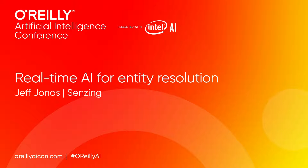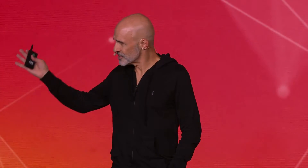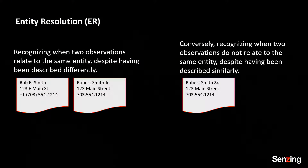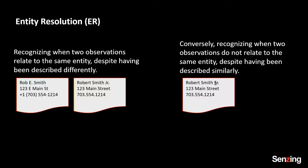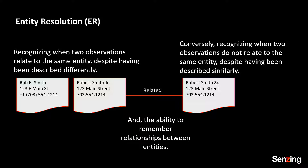When I use the words entity resolution, I mean this: recognizing when two entities are the same, despite having been described differently. There's a lot of differences between these two records. I also mean recognizing when two entities don't relate to the same entity, despite having so much similarity. This third record to the second only has one letter that's different. And then remembering the relationships between these entities. That's what I mean by entity resolution.